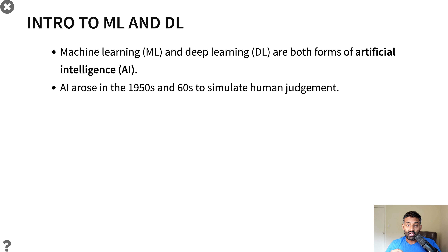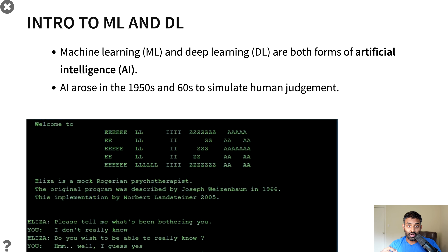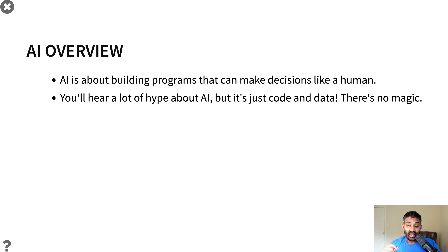Machine learning and deep learning are both forms of artificial intelligence. AI arose in the 1950s and 60s in order to simulate human decisions and judgment. Here's a screenshot from a very early AI called Eliza, which tried to simulate a therapist — you could have a chat where you could ask it questions and it could ask you questions.